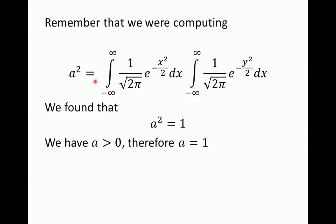So we've shown that A squared equals 1. But what does that mean for A? We wanted to find the value of A, which was the original integral. We know the integral is greater than zero because e to any power is always a positive number. Therefore A is greater than zero, and since A squared equals 1, A equals the positive square root of 1, so A equals 1.